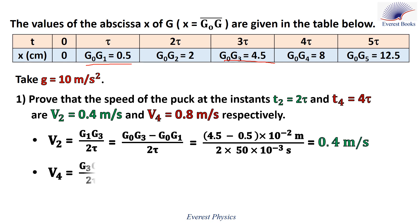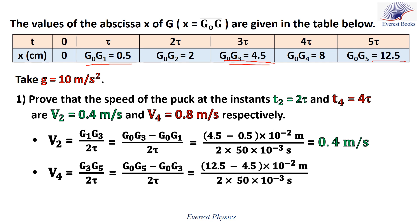Similarly, V4 is the distance G3G5 over the time interval between them. G3G5 equals G0G5 minus G0G3. G0G5 equals 12.5 cm and G0G3 equals 4.5 cm. Therefore, V4 equals 0.8 meters per second.